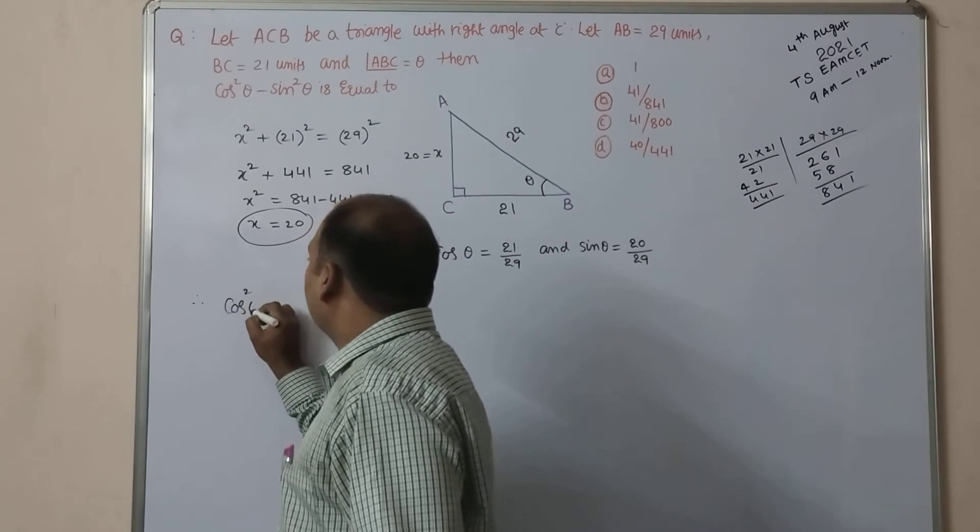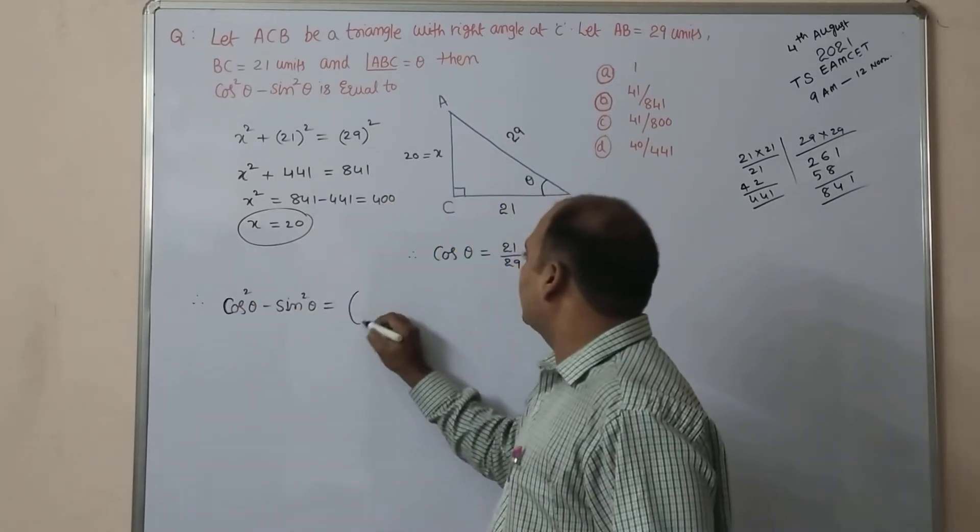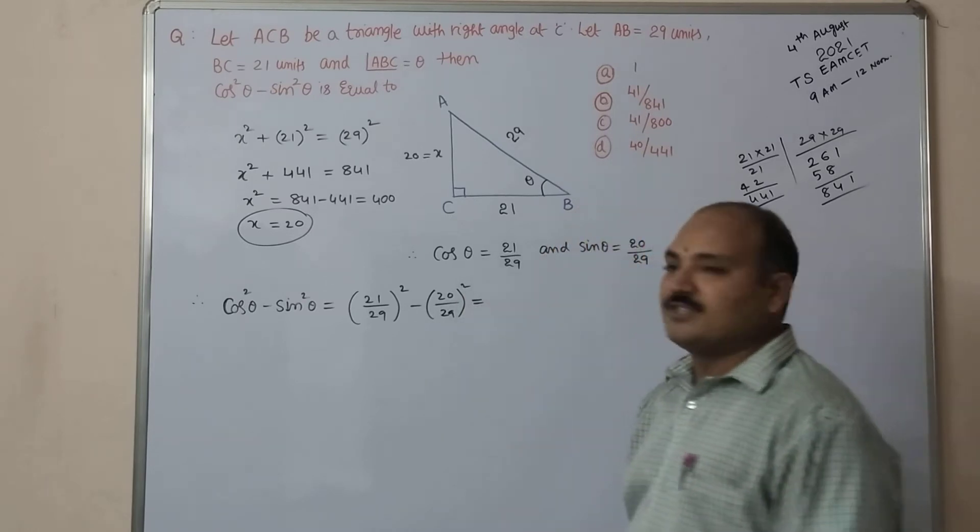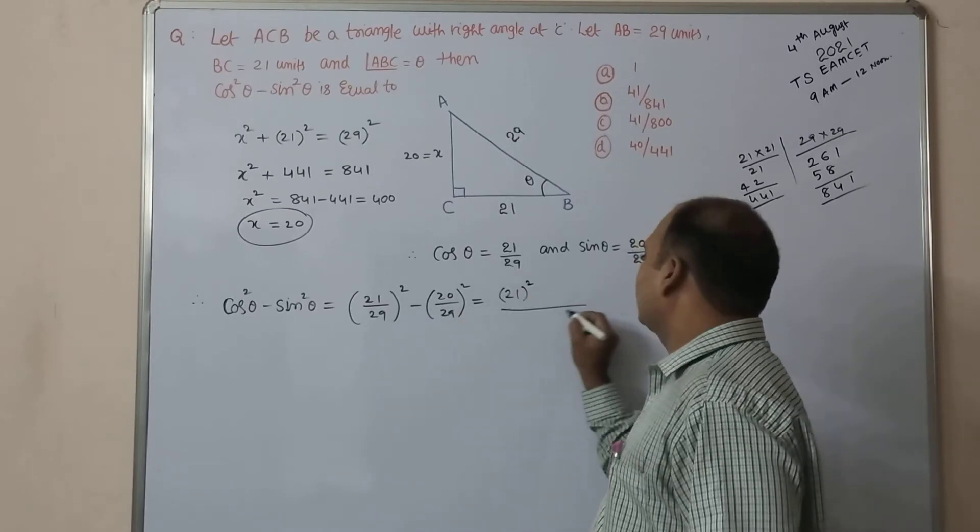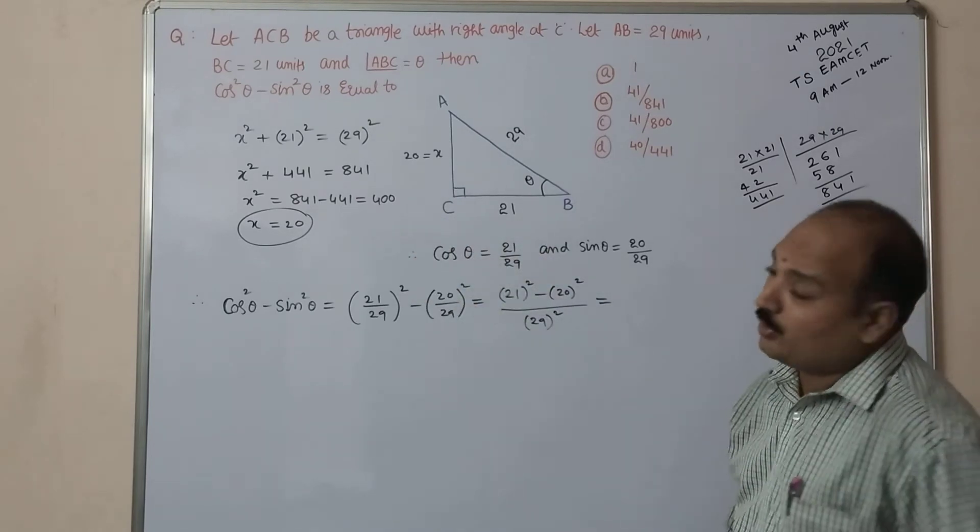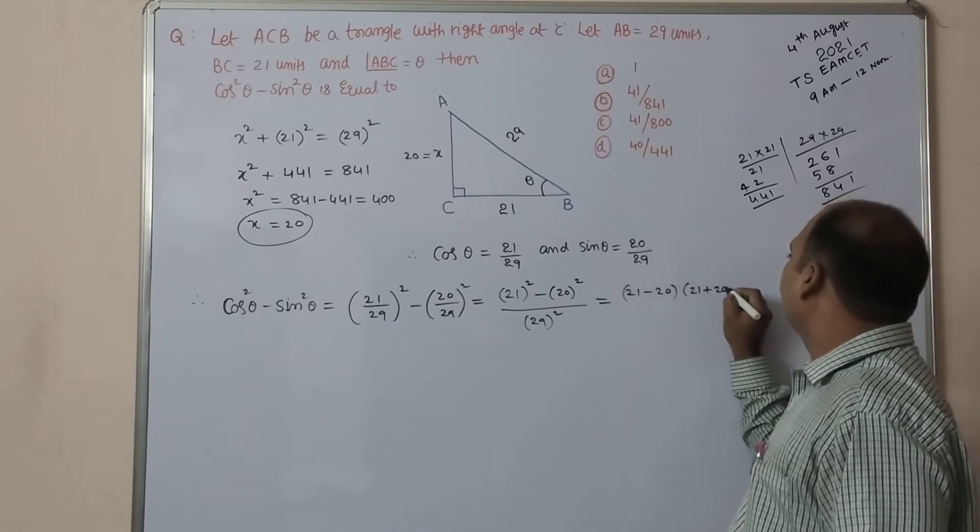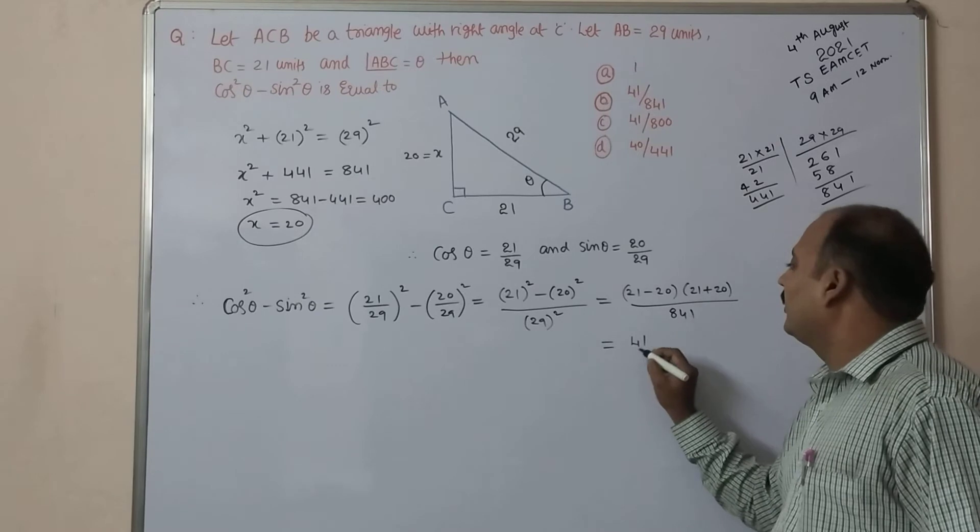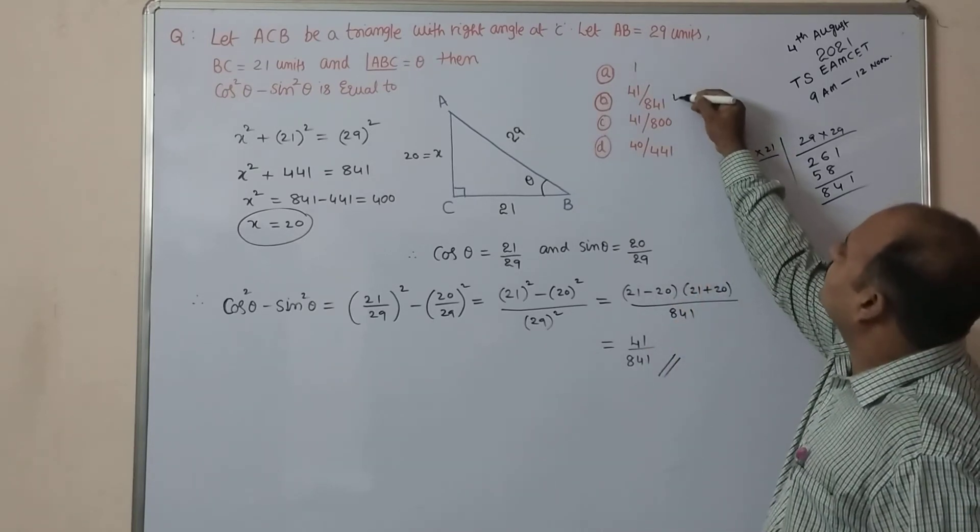Therefore, they are asking cos²θ - sin²θ is equal to cos²θ means (21/29)² minus (20/29)² which is equal to 21² minus 20², LCM is 29² only. 29² minus 20². 21 square we have already, 20 square also here we got 400. Otherwise A+B times A-B also we can do that. (21-20)×(21+20) divided by 29 whole square we already done that, 841. So 1×41 by 841. The answer is 41 by 841 that is in second option.